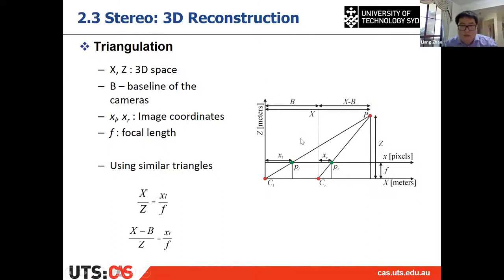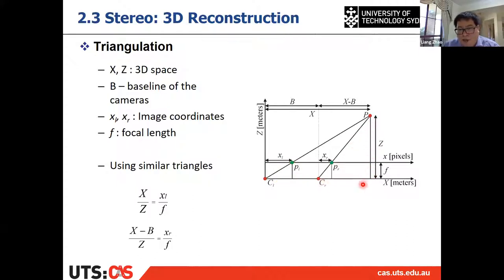From the first pair of similar triangles, we get: f / xL = Z / X. That gives us the first equation.